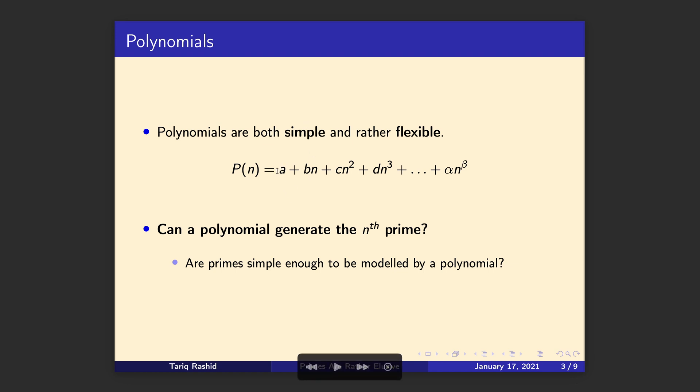So here's just a definition of a polynomial. It can be a constant plus b times something plus c times that thing squared and so on. You might remember from school quadratics like 3 plus 4x plus 5x squared, that's a polynomial.